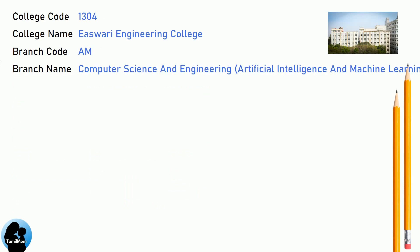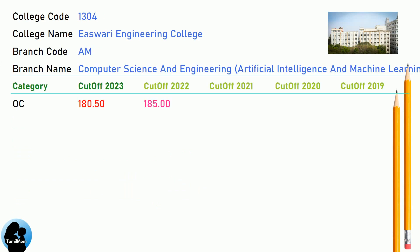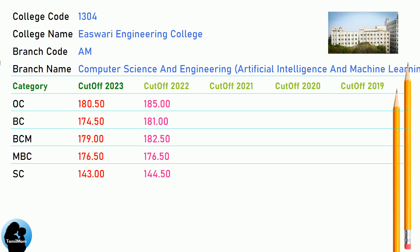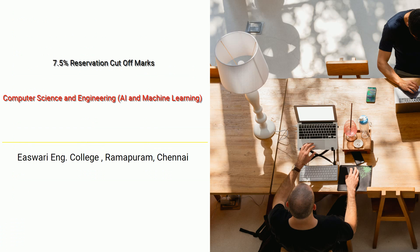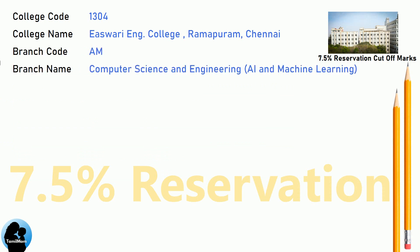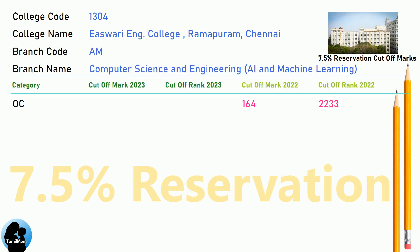DNA Cut-Off for Eshwari Engineering College in Computer Science and Engineering, Artificial Intelligence and Machine Learning. DNA 7.5 Reservation Cut-Off for Eshwari Engineering College in Computer Science and Engineering, AI and Machine Learning.